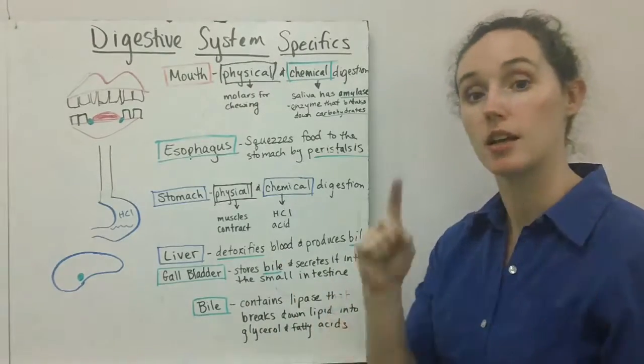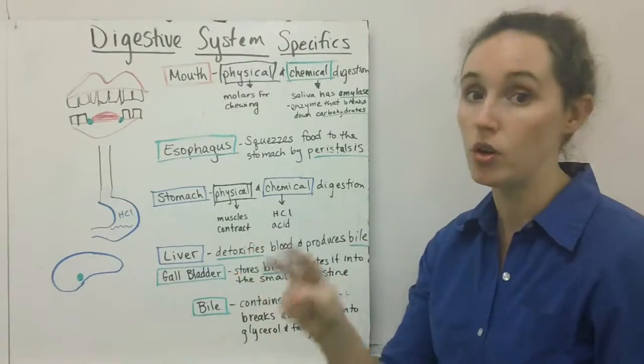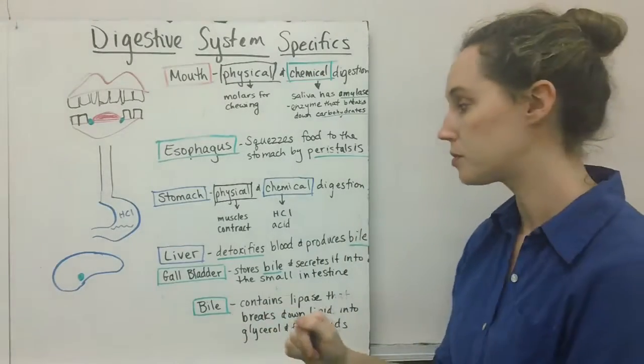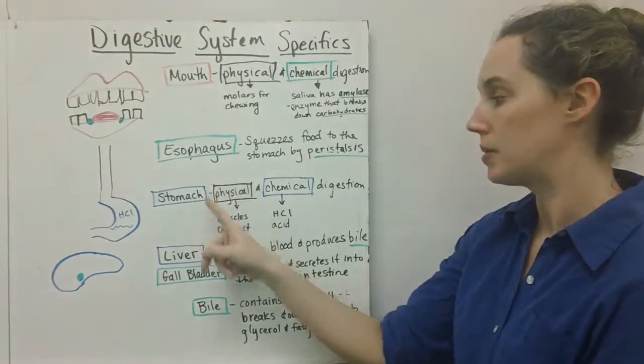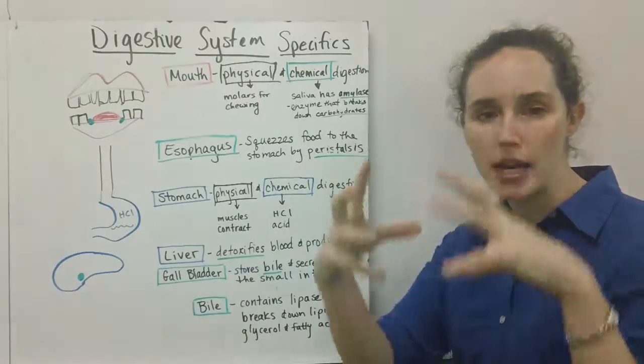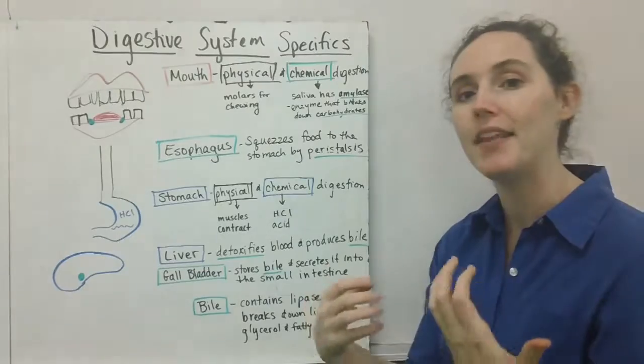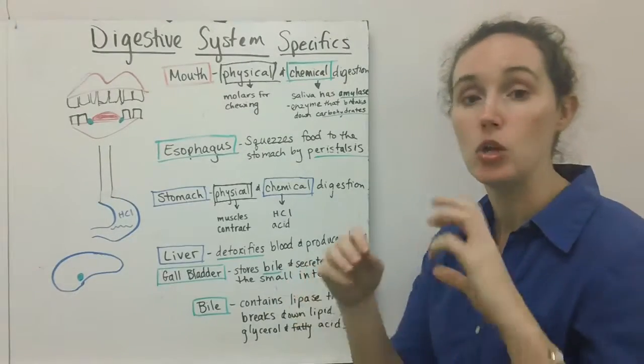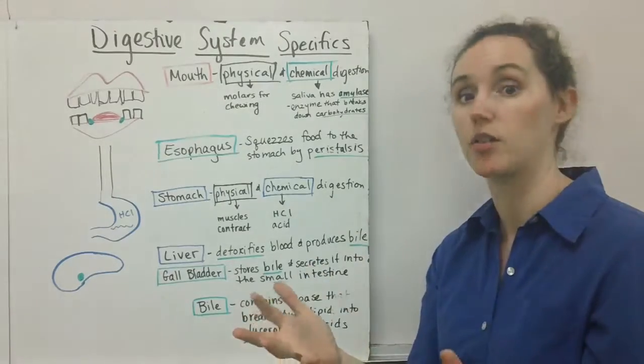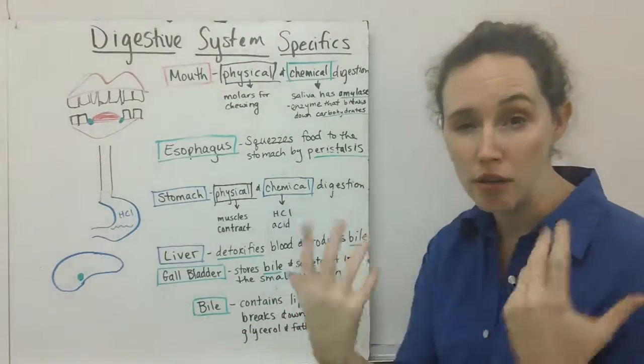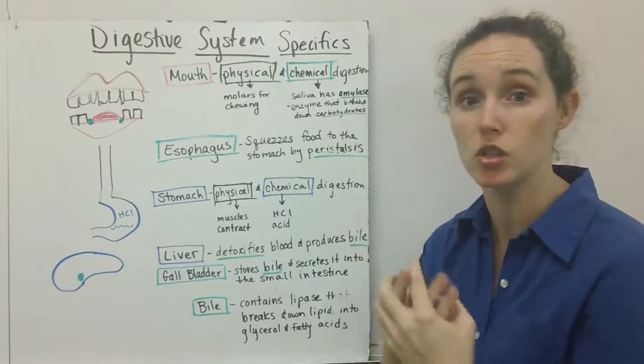Once your food is in your stomach, there are two ways—physical and chemical—that your food is even further digested. In your stomach, you actually have muscles that will contract and churn your food, and then you have hydrochloric acid which is also in your stomach which will further break down all your food molecules. Then you have that slurry of digested food and juice called chyme.